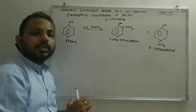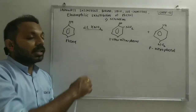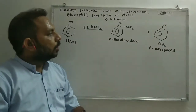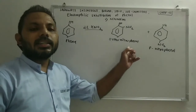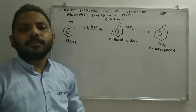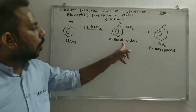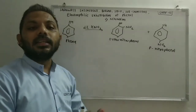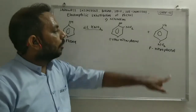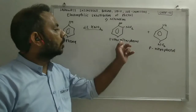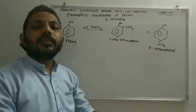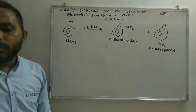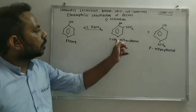If we want to separate these two products, we can do so easily because of the difference in their volatility. Ortho-nitrophenol is more volatile — it can be converted into vapour form and distilled easily — whereas para-nitrophenol is less volatile. Using dilute HNO3, we get a mixture of ortho-nitrophenol and para-nitrophenol as products.